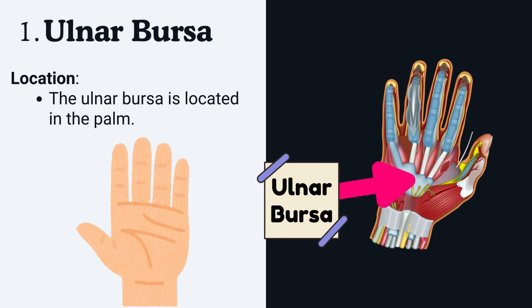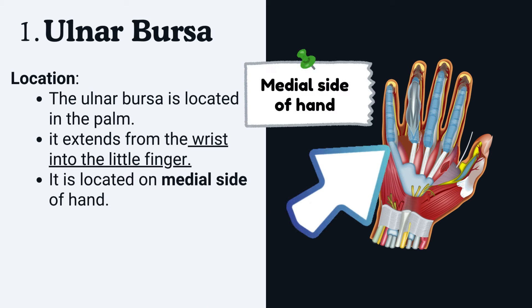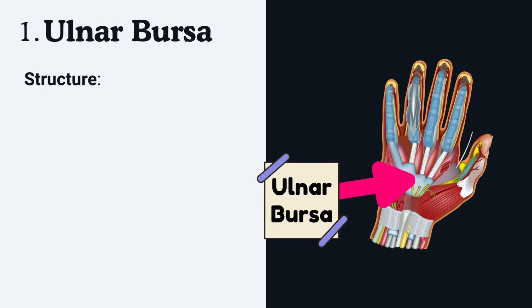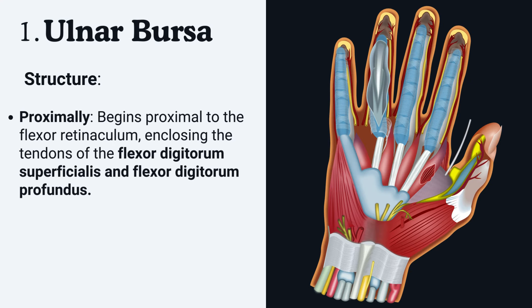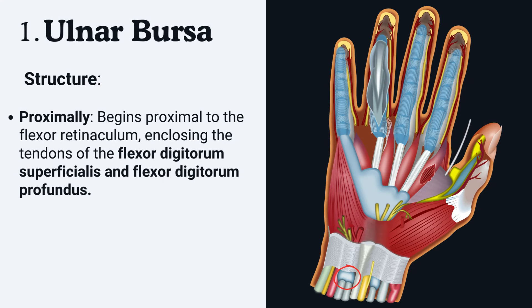Number one: Ulnar bursa. Location — the ulnar bursa is located in the palm and extends from the wrist into the little finger. It is located on the medial side of the hand.